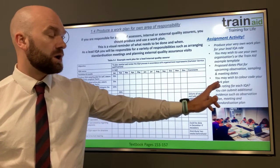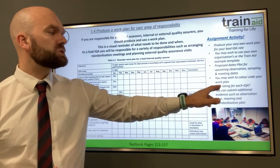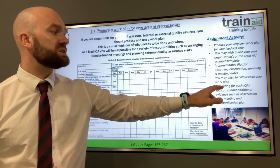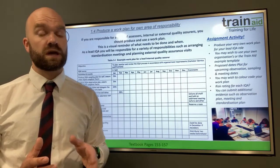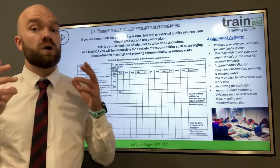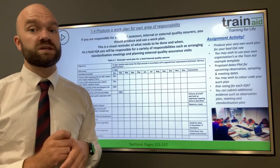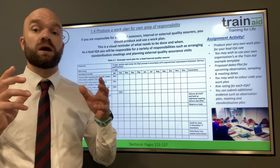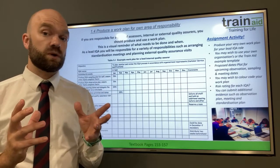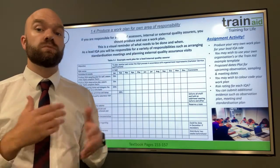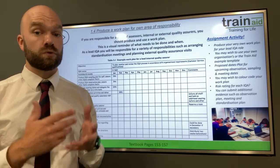You could colour code your own work plan, and you could also add a risk rating for each IQA that you're monitoring. If there is perhaps a new IQA within your organisation, they are deemed as high risk — being new to the IQA role, you might need to monitor and sample their work more often.